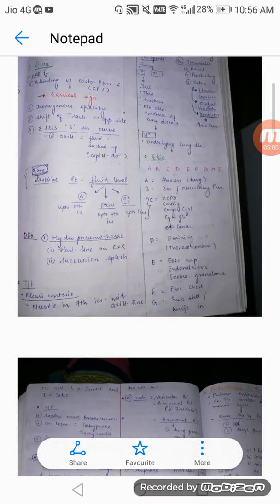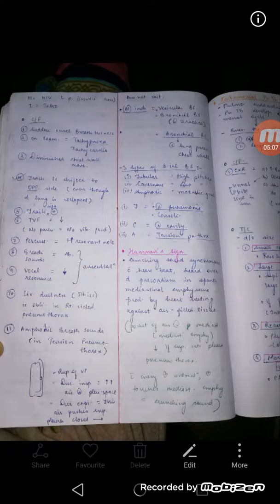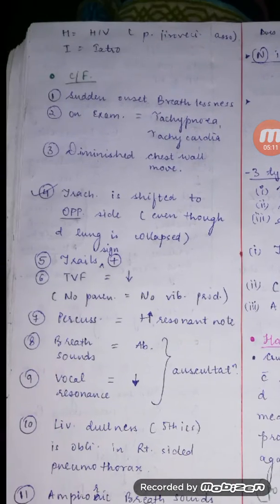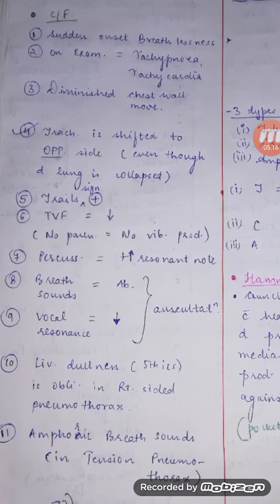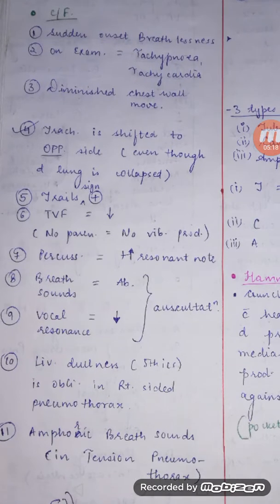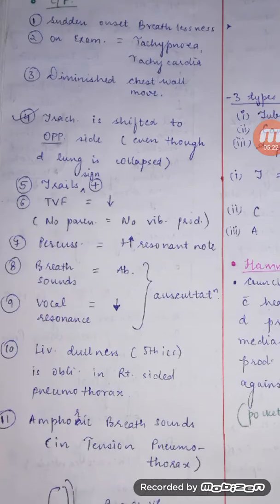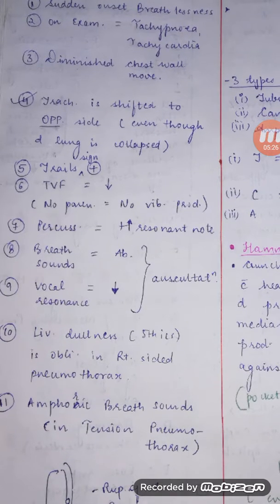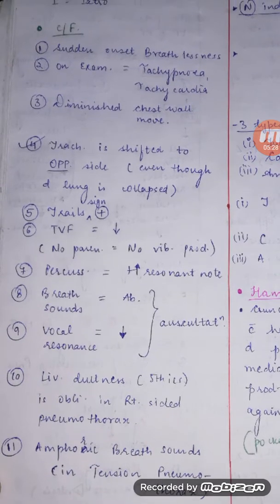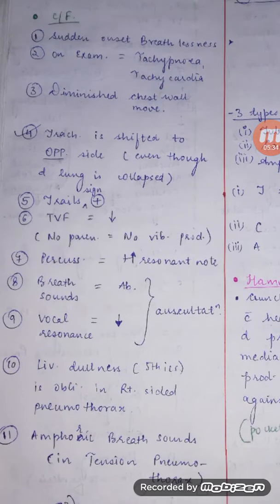What will be the clinical features? A patient with pneumothorax will present with sudden onset breathlessness. Just like in pulmonary embolism, there is sudden onset dyspnea. On examination there will be tachypnea and tachycardia, because the person cannot breathe, causing anxiety and sympathetic activation.